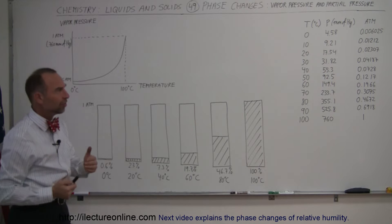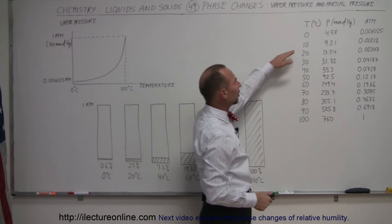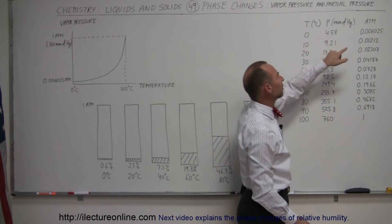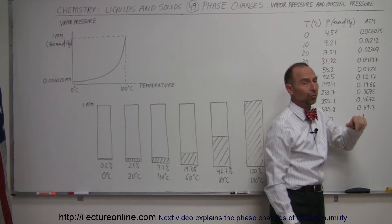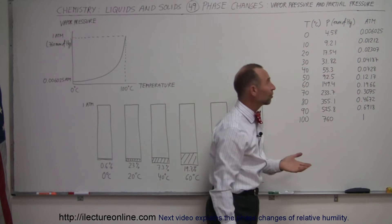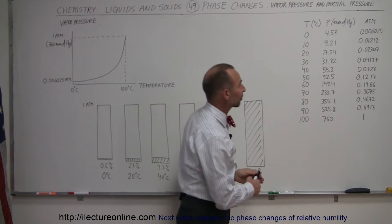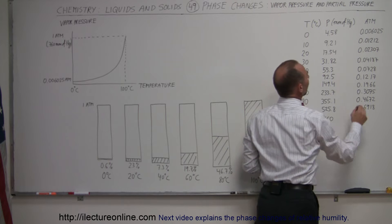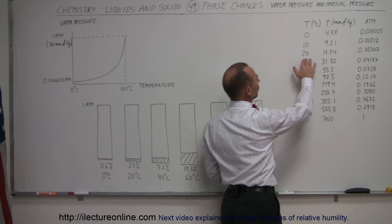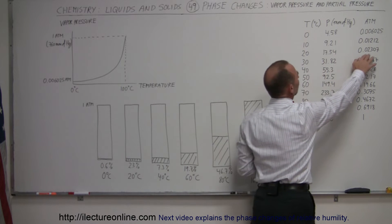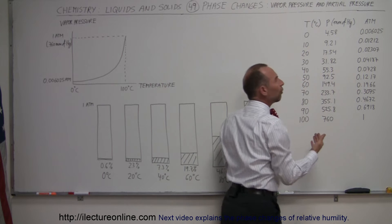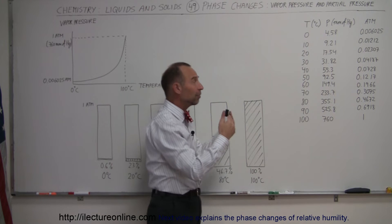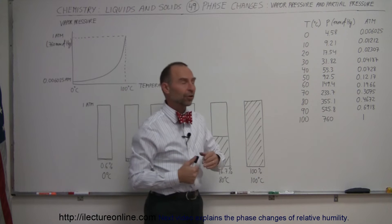The amount of vapor pressure in the atmosphere at zero degrees centigrade can be 4.58 millimeters of mercury, which accounts to just over six tenths of a percent of atmospheric pressure. At 10 degrees it can be 9 millimeters of mercury, which is 1.2 percent of atmospheric pressure. At 20 degrees it's up to 2.3 percent, and so forth. The amount of vapor pressure that can exist in the atmosphere increases with atmospheric temperature.